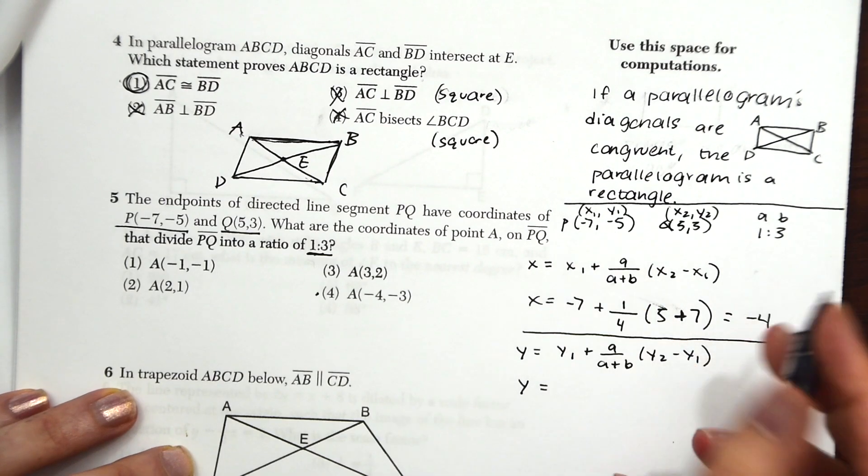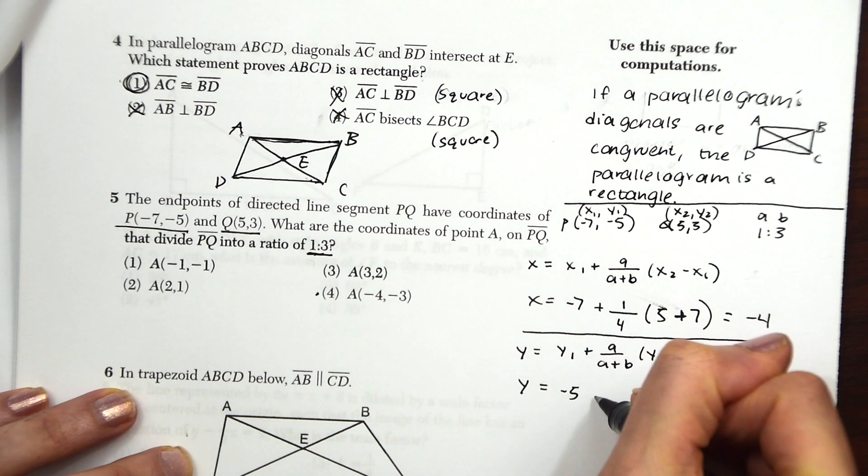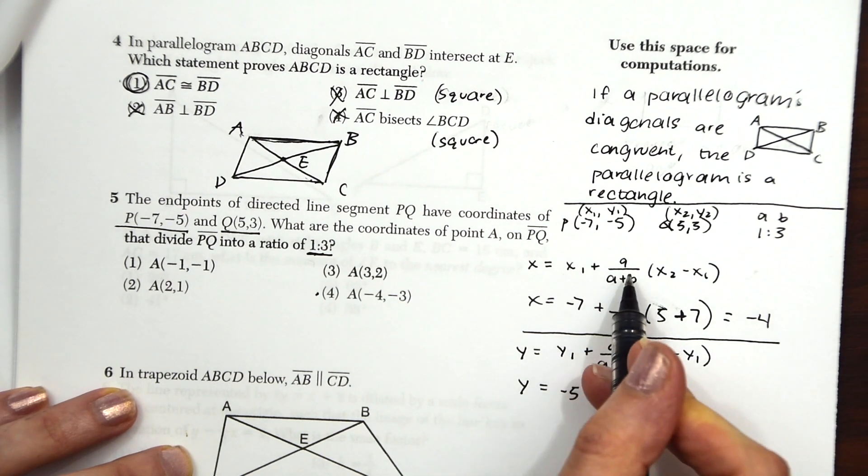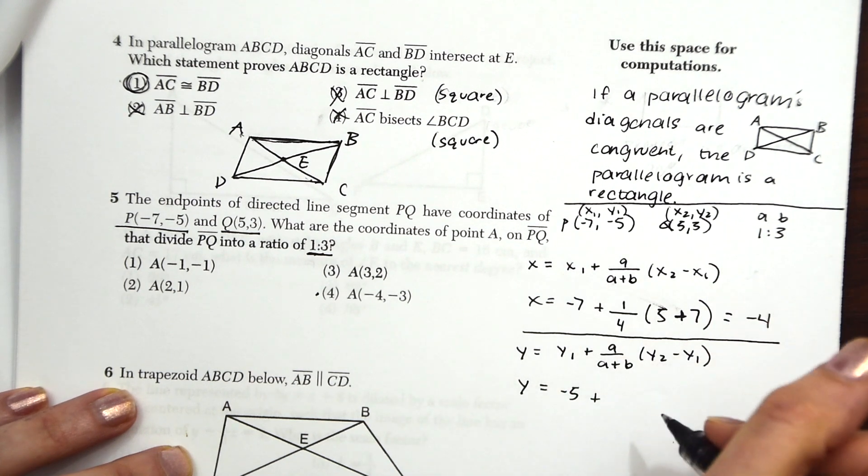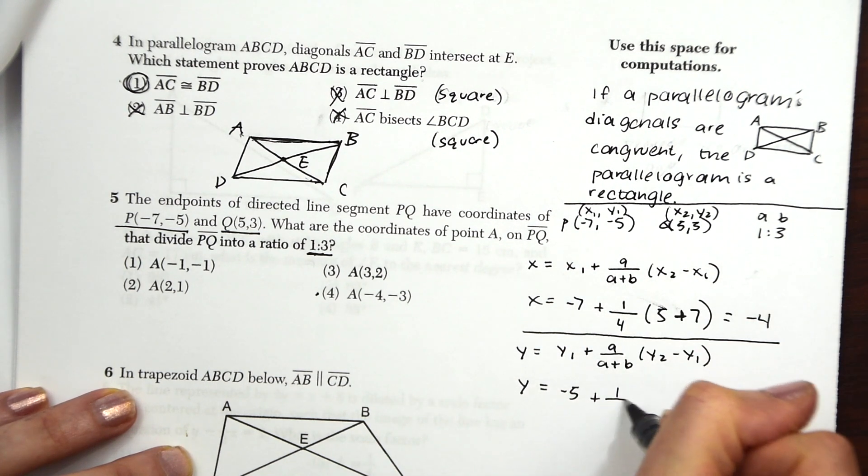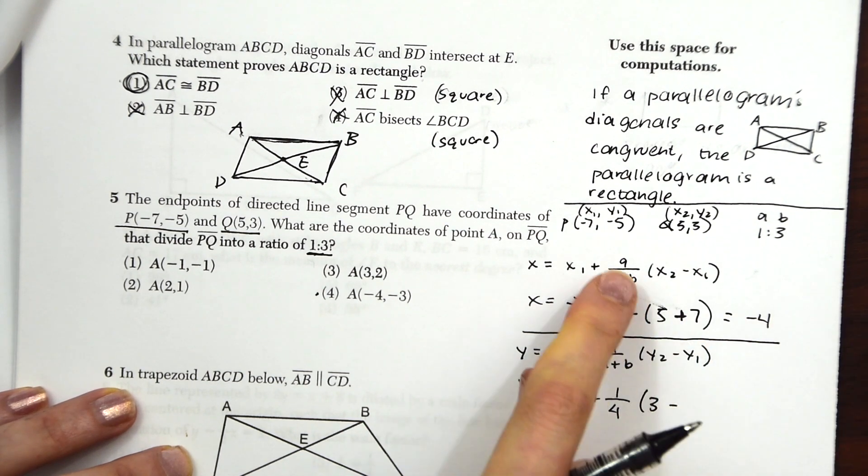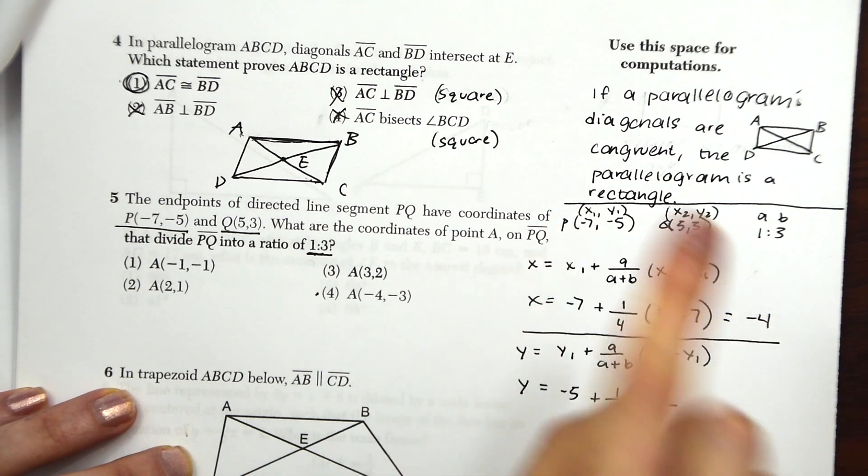So we have y1 is minus 5, plus A over A plus B, that same setup that was in the x coordinate formula. It's going to be the same thing, 1 fourth. And then y2 is 3, minus y1, which is minus 5.